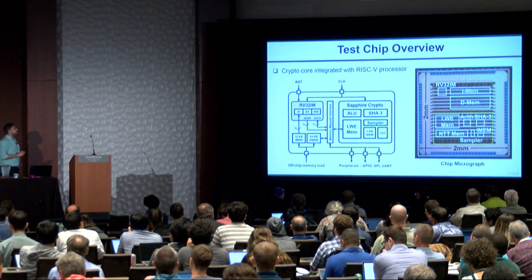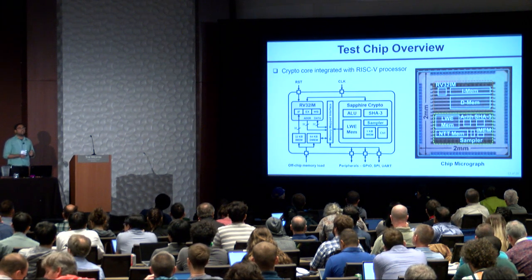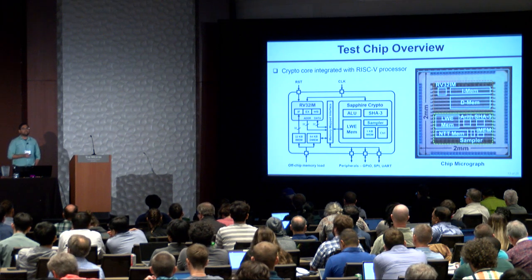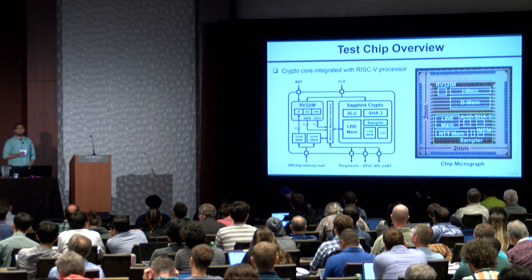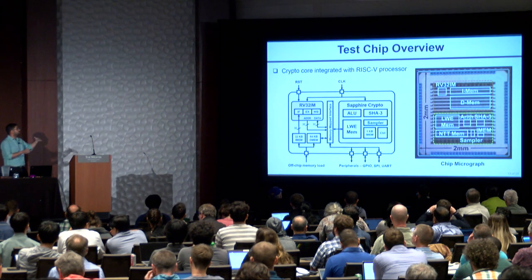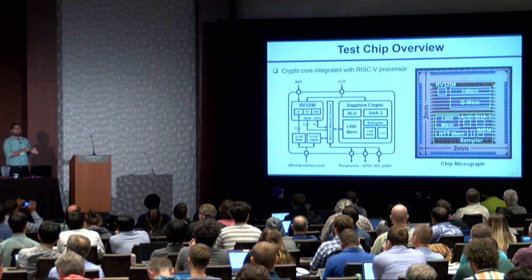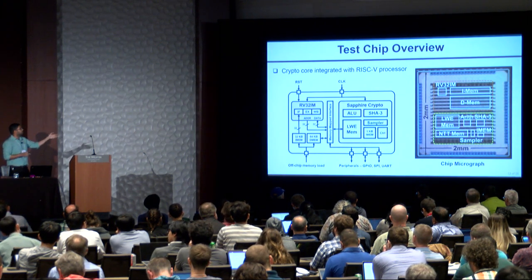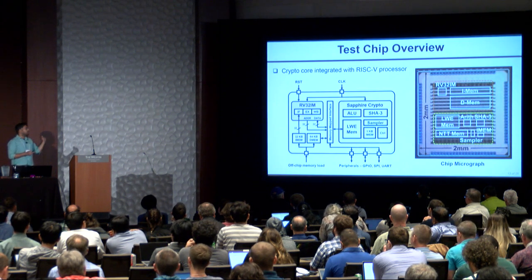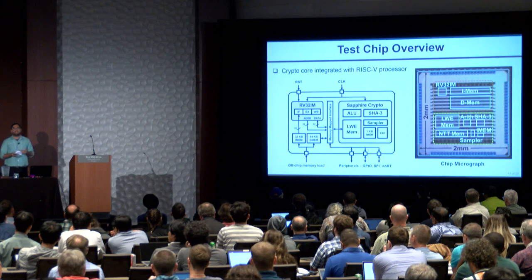In our test chip implementation, we have integrated this cryptographic core with a low-power RISC-V microprocessor to provide more programmability. Our RISC-V processor implements the RV32IM instruction set and has Dhrystone performance comparable to the ARM Cortex-M0. The crypto core, including the memory and internal registers, can be accessed from the RISC-V processor through a simple memory-mapped interface. The same interface is also used to control peripherals like GPIO, SPI, and UART for debug purposes. This memory-mapped interface allows us to access the crypto core through only load and store instructions without any changes to the compilation toolchain.